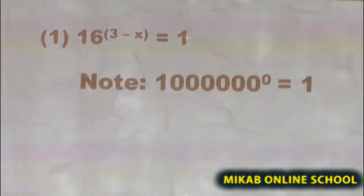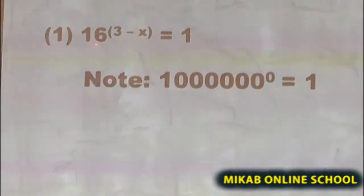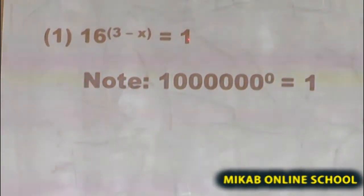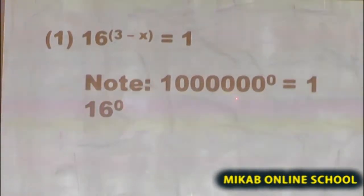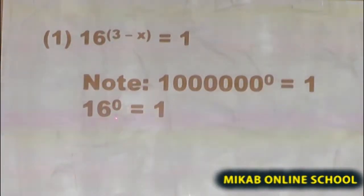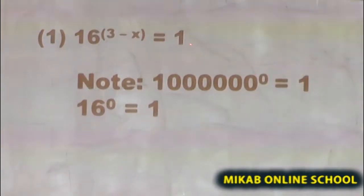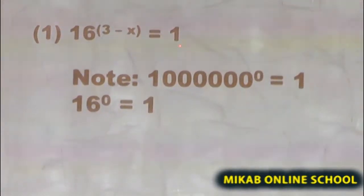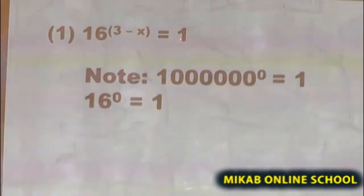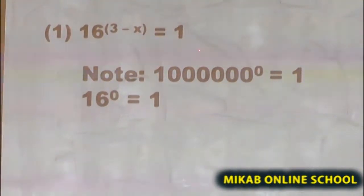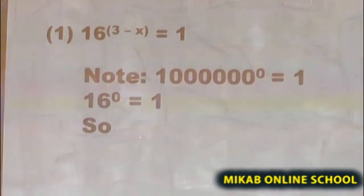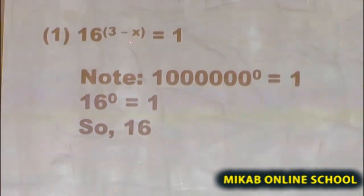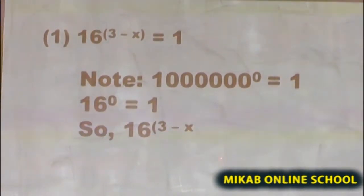We are going to express this 1 in terms of the value 16. To do so, we recall the zero law: any non-zero value raised to the power of 0 gives us 1. So instead of writing 1, we put 16 raised to the power of 0. Therefore, the equation becomes 16 raised to the power of (3 minus x) equals 16 raised to the power of 0.